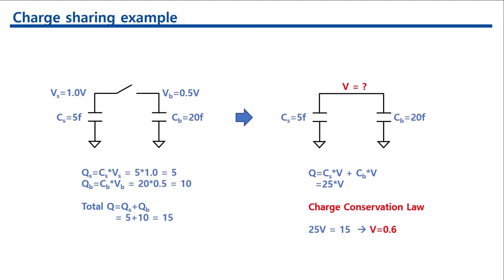For example, if Cs is 5 femtofarad, Cb is 20 femtofarad, and the voltage level of Cs is 1 volt, and Cb is 0.5 volt. Now, if we close the switch, the final voltage level will be 0.6 volt.